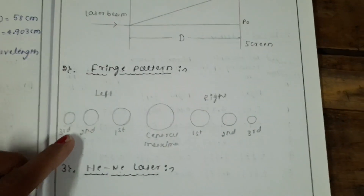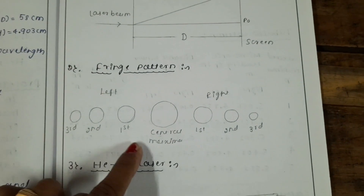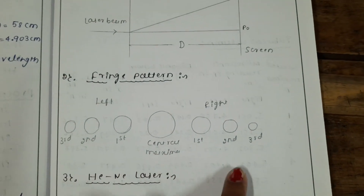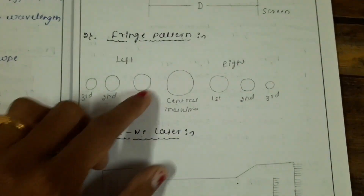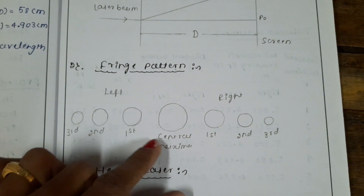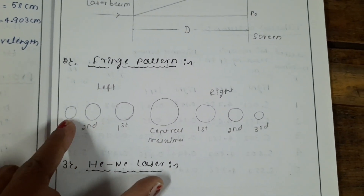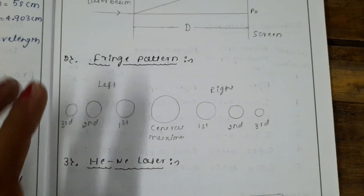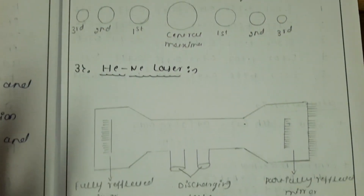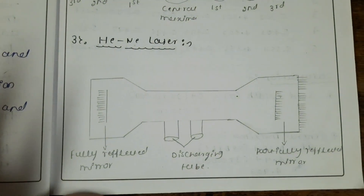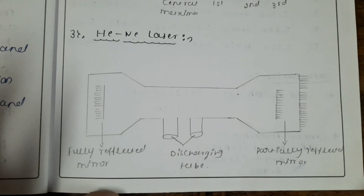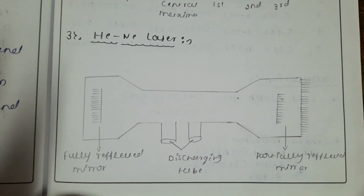This is how the experimental setup looks like — Fraunhofer diffraction by single slit. This is the fringe pattern you get on the screen: that is central maxima, first order, second order, right and left.